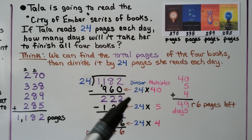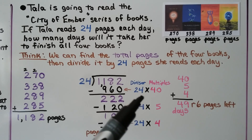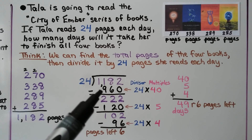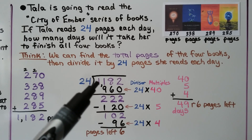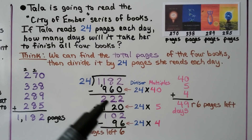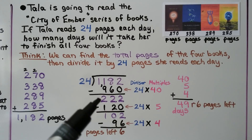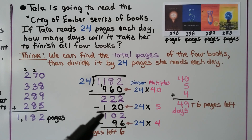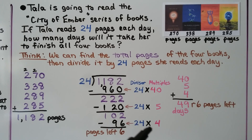We can divide with any multiple of the divisor. We do 24 times 40, which is 960, and subtract it from the dividend to get 222. We can't do 24 times 10 because that would be 240 — too great — so we try 24 times 5, which is 120. We subtract it and get 102. Then we subtract 24 times 4, which is 96.